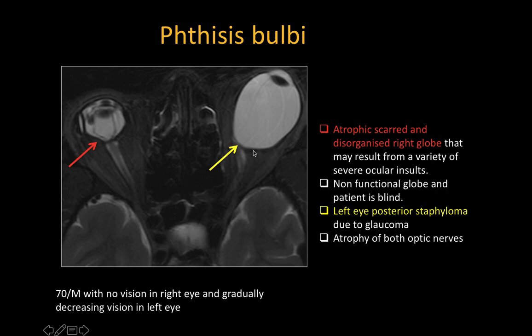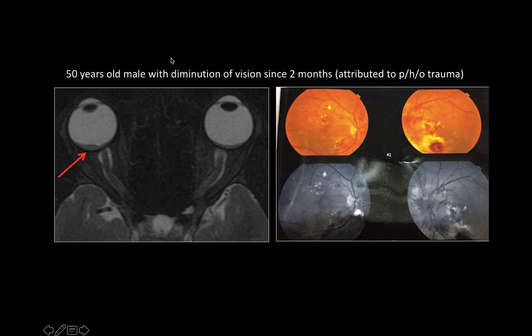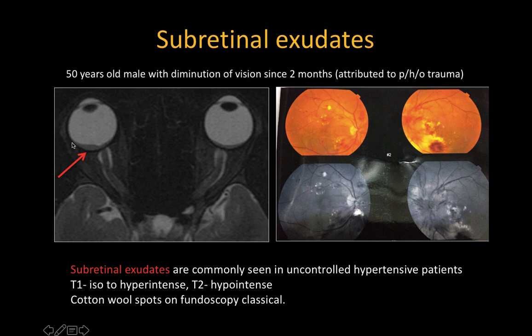This 50-year-old male with diminution of vision attributed to trauma: on imaging we see star-shaped subretinal exudates — T2-hypointense layering seen in the posterior aspect of the globe, with no enhancement on post-contrast scans. These subretinal exudates are commonly seen in uncontrolled hypertensive patients, typically T1 hypo-to-hyperintense and T2-hypointense. On fundoscopy, cotton wool spots are seen. This is classic hypertensive retinopathy.